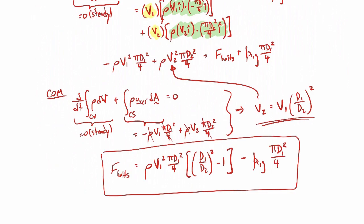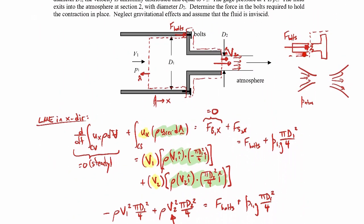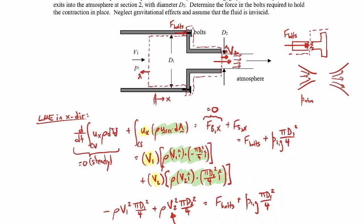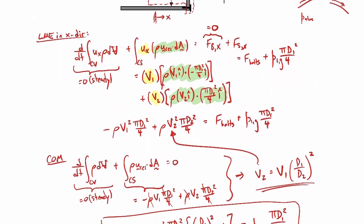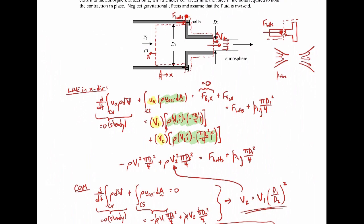The bolt force was drawn assuming compression. If the final expression evaluates to a positive number given specific values, the bolts are in compression; if negative, the arrow reverses and the bolts are in tension. This problem is a straightforward application of the linear momentum equation in the x direction and conservation of mass. Probably the trickiest part is drawing the control volume correctly — specifically, cutting through the bolts so the bolt force appears in the equation.